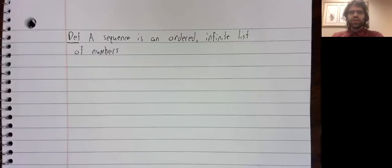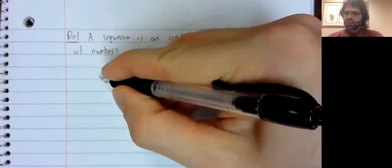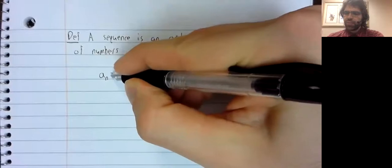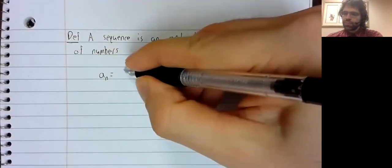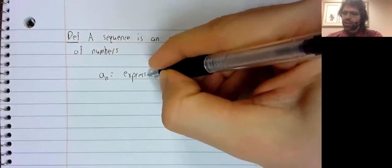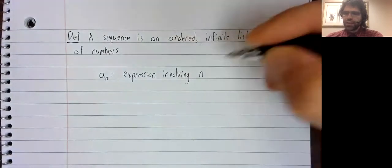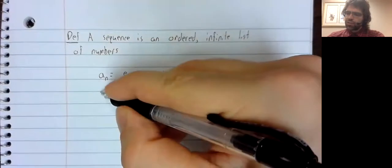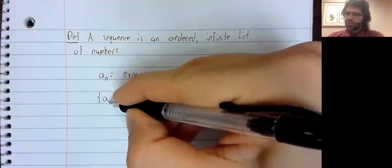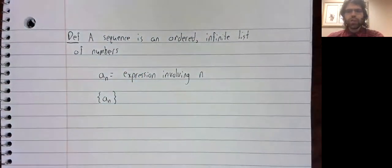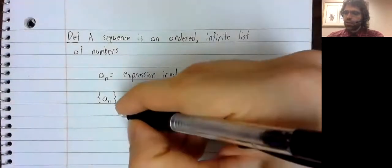If a sequence is infinite, we can't merely list all its entries, so how should we describe it? Well, the classic way to describe a sequence is this: you write a sub n equals some expression involving n. And once you have that, you can write a sequence in the following way: a sub n in curly brackets.